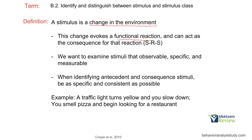Once that reaction occurs, we have a consequence following that response. That consequence stimulus influences whether the response continues in the future. We want to examine stimuli that are observable, specific, and measurable. Something like the wind blowing is tough to observe and measure — it's a stimulus and can influence behavior, but when identifying antecedents and consequences, be specific and consistent. Give your technicians and stakeholders something they can reliably look at. A traffic light turns yellow — that's the change — and you slow down. You smell pizza — that's the change — and you start looking for a restaurant. A stimulus is just a change in the environment.